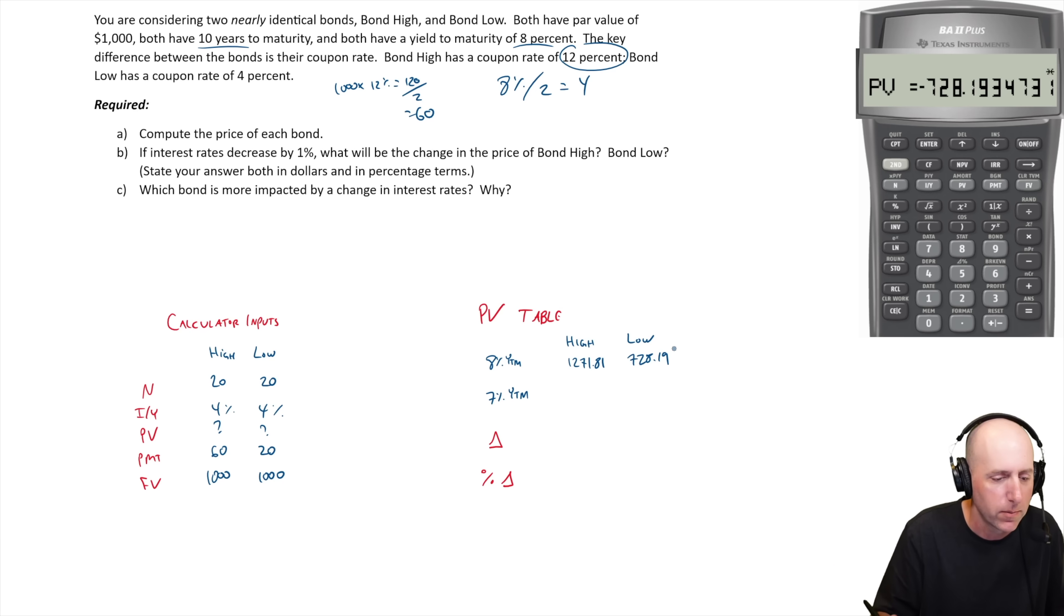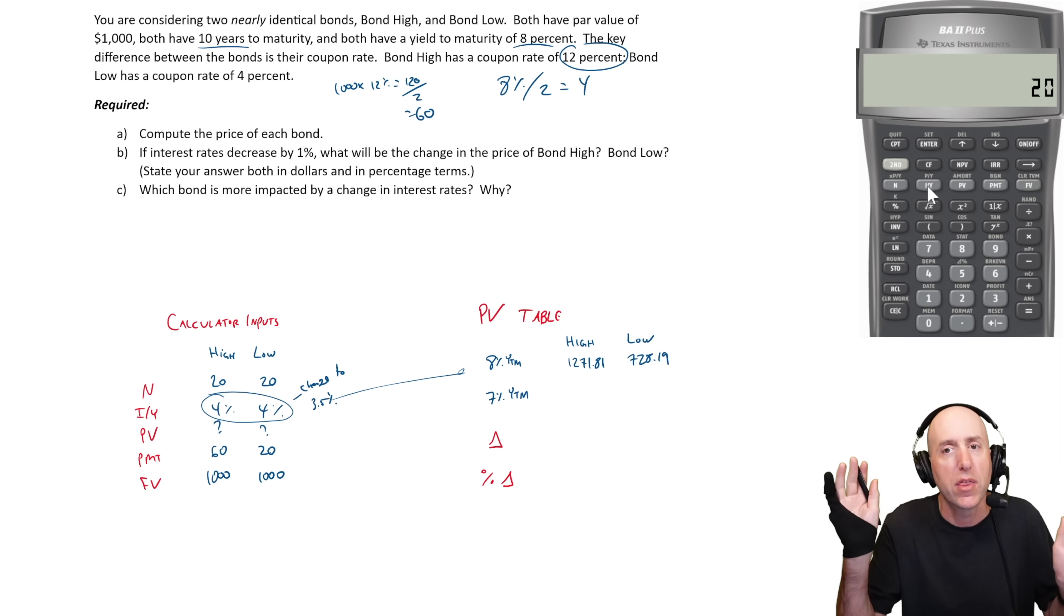If interest rates decrease by 1%, that's yields to maturity in the market decrease by 1%, so now it's 7% yield to maturity for this bond. Well, we just change the IY from 4 based on our 8% divided by 2, now to 3.5%. What are we expecting to have happen? The interest rates in the market go down by 1%. Well, our bonds, the coupon rates they're paying are more attractive, our bond prices are going to go up.